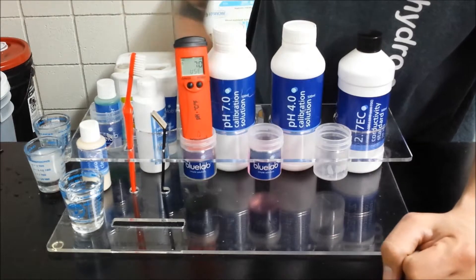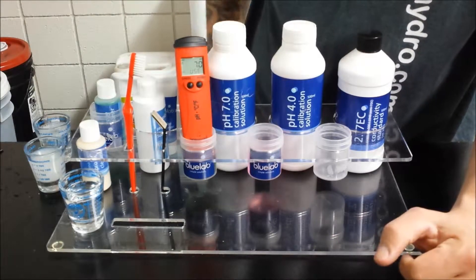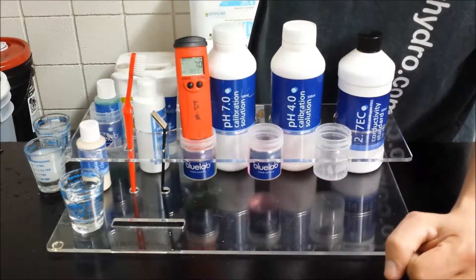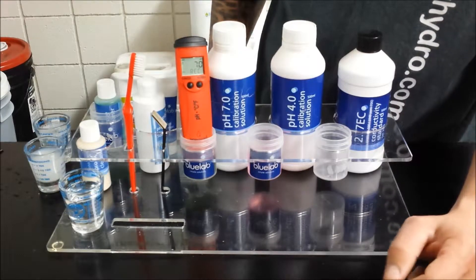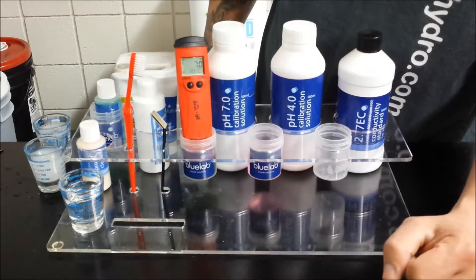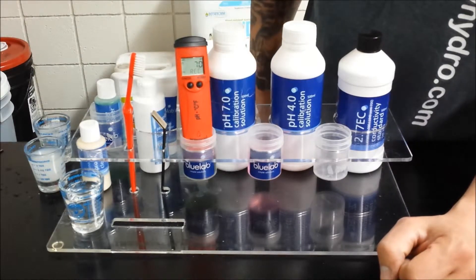Release the button. It says now use 7.0. Then it's going to say REC or record 7.0 so you know it's calibrating. Then you're going to want to watch the screen and it's going to tell you when to use the 4.0.